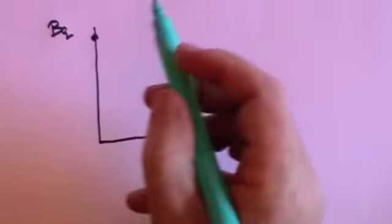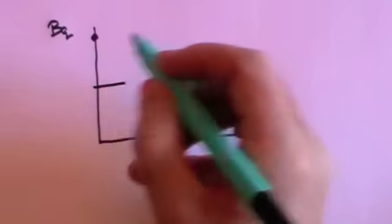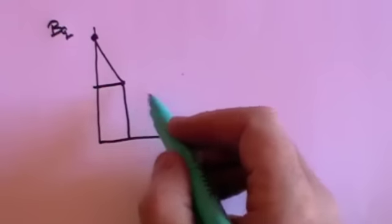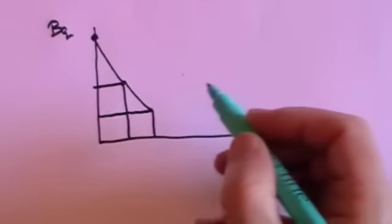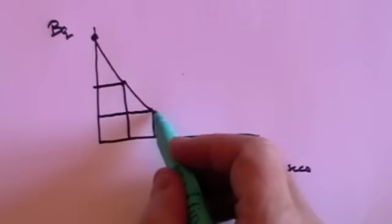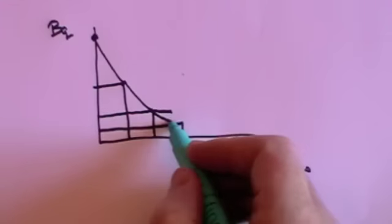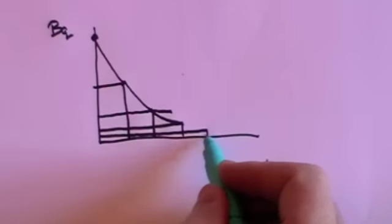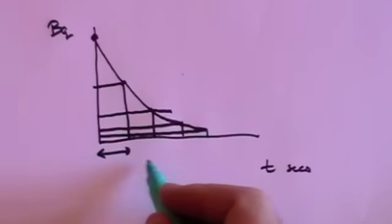with our activity up the side which we're now going to measure in becquerels and our time in seconds, if we start here and after 10 seconds we find that we've got half left and then after another 10 seconds we find we've got half of that and after another 10 seconds we've got half again and then after another 10 seconds we've got half again